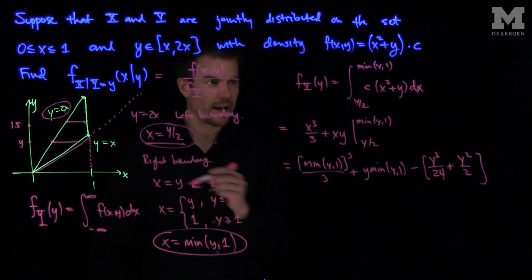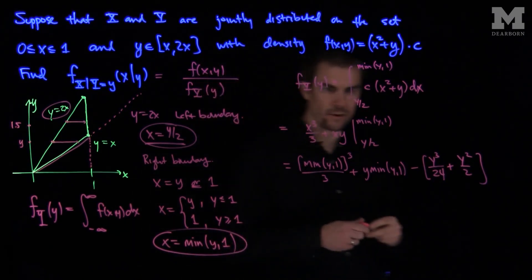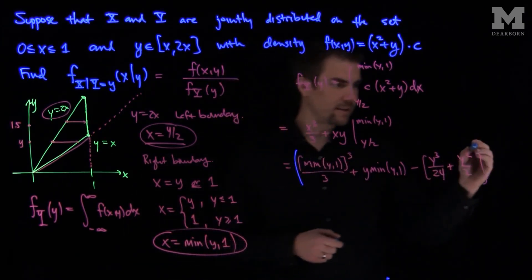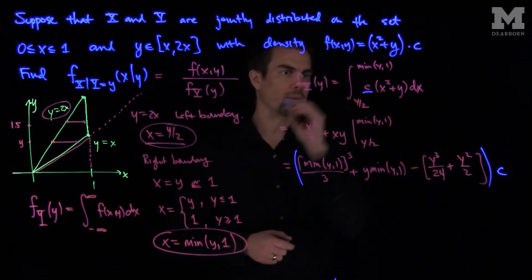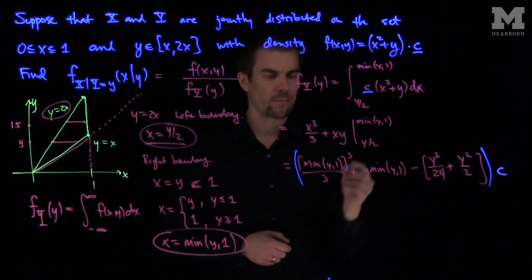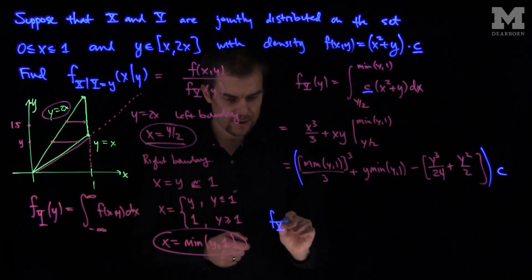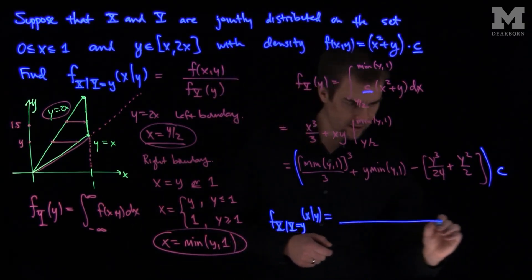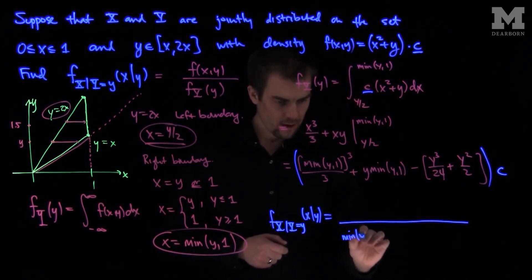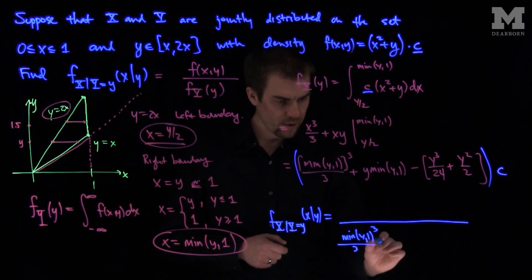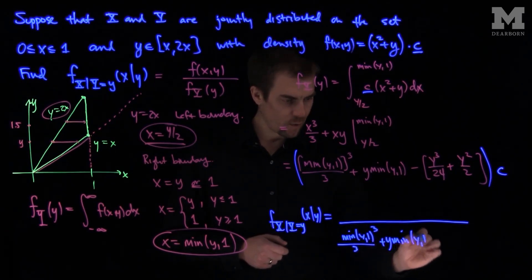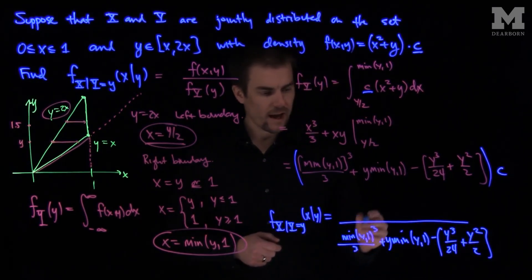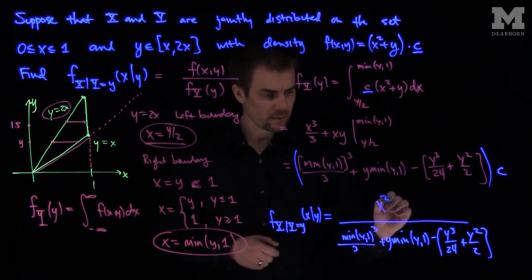Now our final answer: the constant c appears in both the marginal distribution and the joint distribution, so it cancels. The conditional PDF f_{X|Y}(x|y) equals (x squared plus y) in the numerator. The denominator is the minimum of y and 1, cubed over 3, plus y times the minimum of y and 1, minus y cubed over 24, plus y squared over 2.